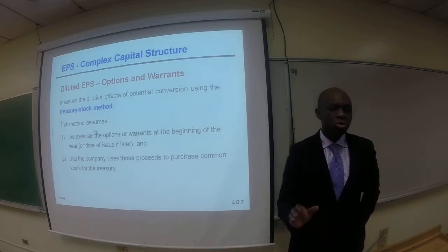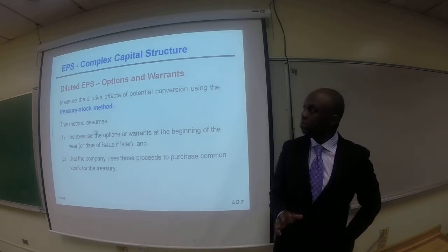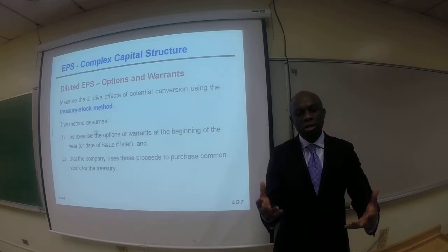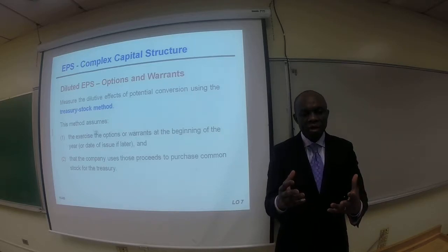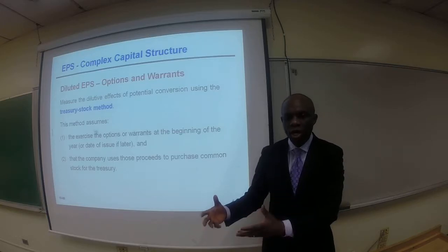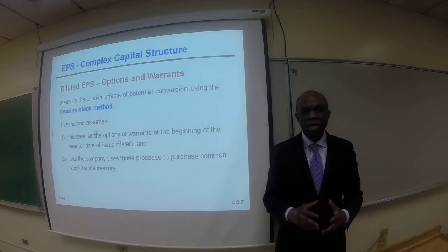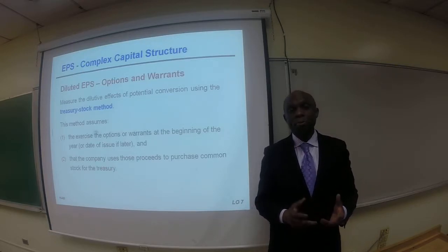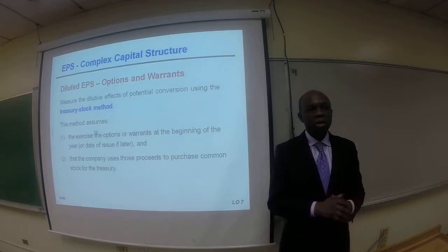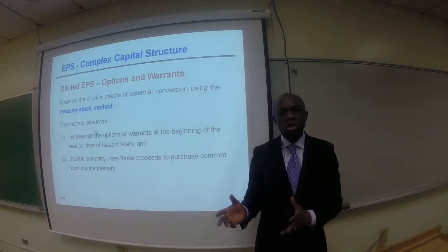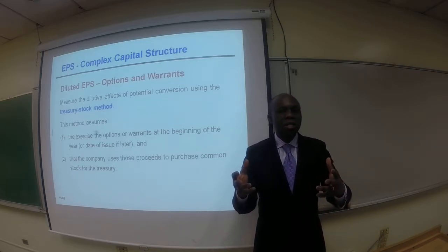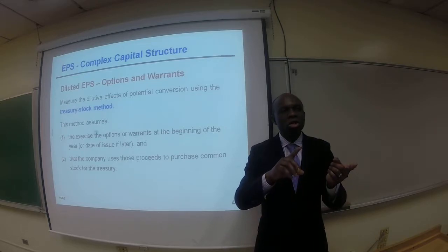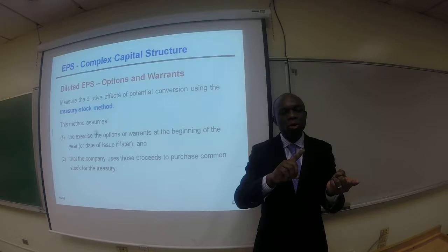Let's take a look at two interesting issues here relative to EPS computation: options and warrants. Recall, at the beginning of the chapter, we talked about those securities that have the potential to dilute or downgrade EPS. We talked about different examples of dilutive securities. We already talked about convertible bonds — when those bonds are converted to common stock, the company is not actually getting cash from the bondholder; they are just converting their bond into common stock.